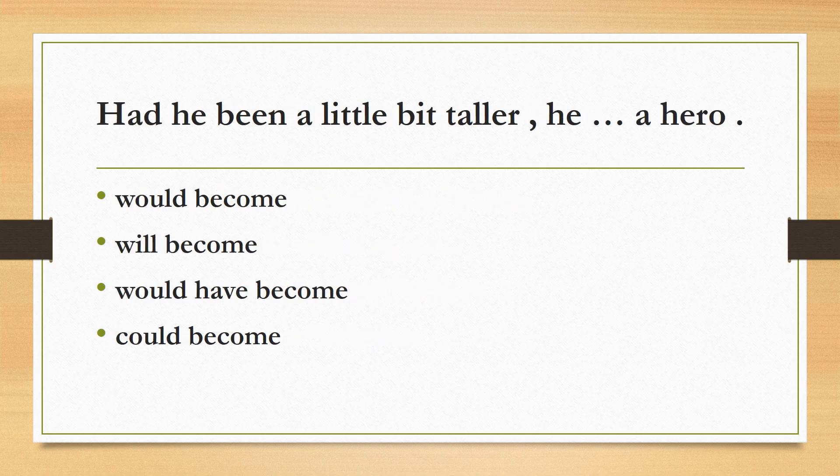Had he been a little bit taller he a hero, would become, will become, would have become, could become. The correct answer is 'would have become'. In conditional sentences, if the condition is 'if plus had plus verb 3', the main clause is 'would, should, could, might plus have plus verb 3'. That means, had he been a little bit taller he would have become a hero.